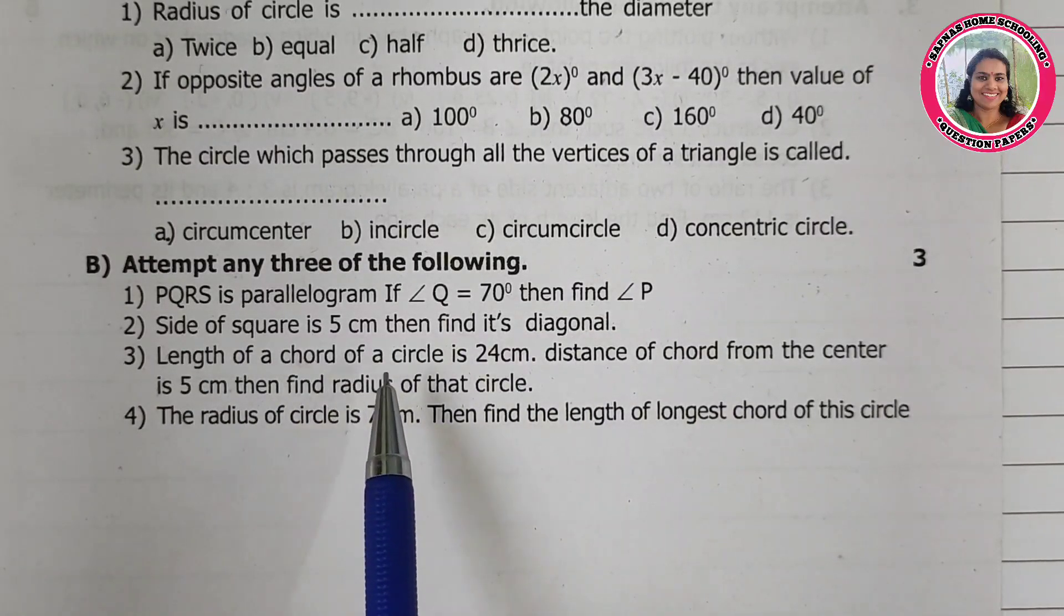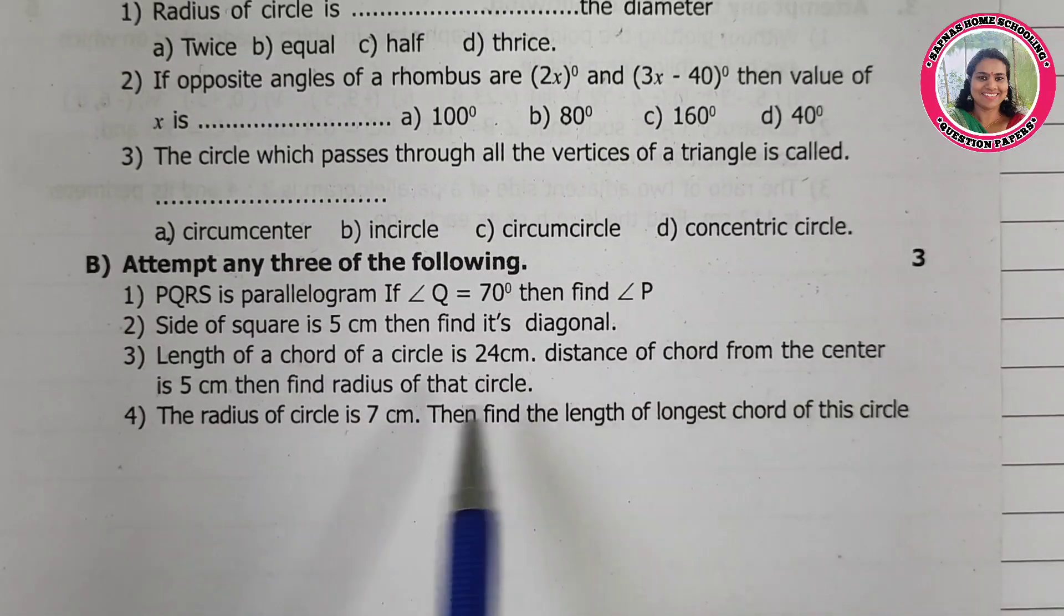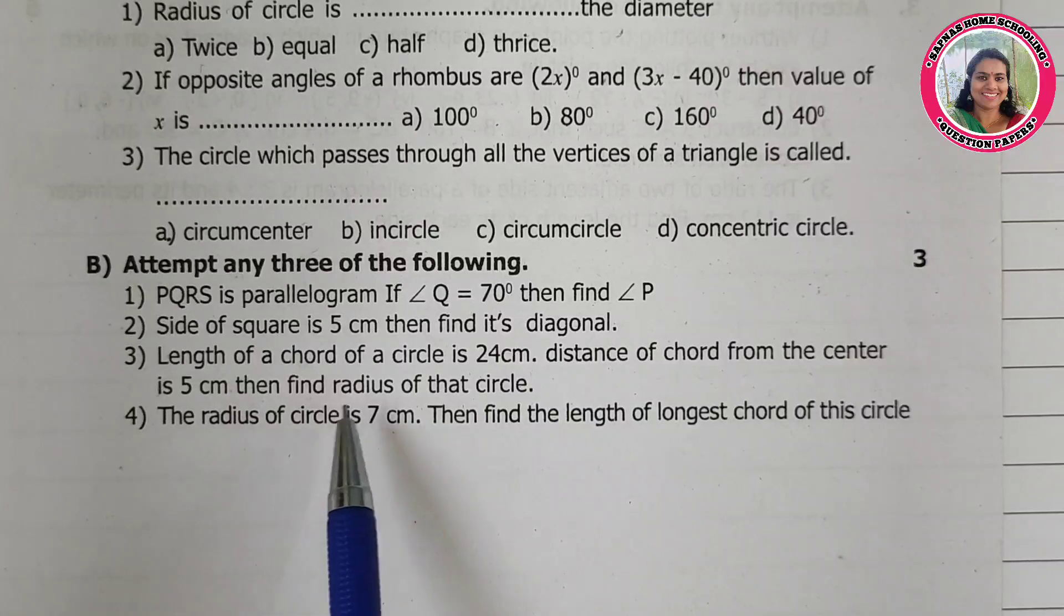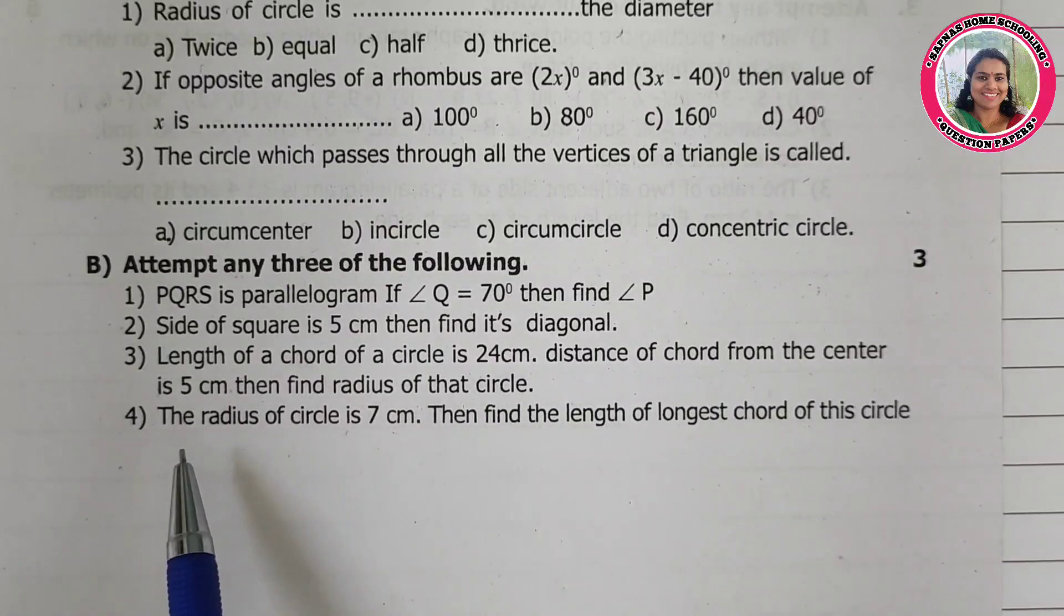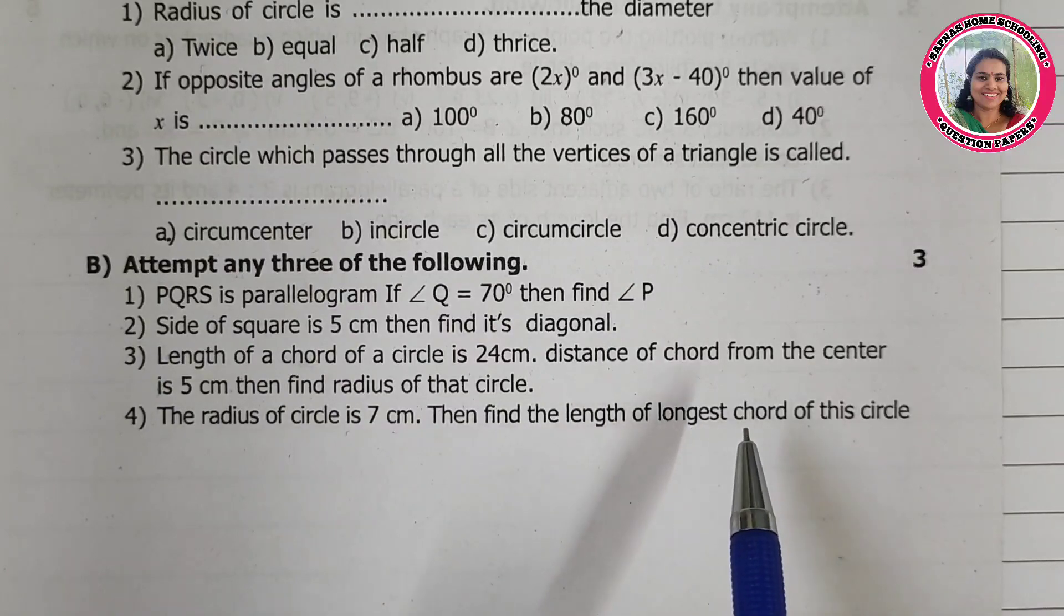Length of a chord of a circle is 24 cm. Distance of the chord from the center is 5 cm, then find the radius of that circle. The radius of the circle is 7 cm, then find the length of the longest chord of the circle.